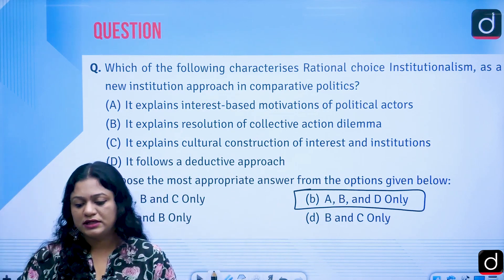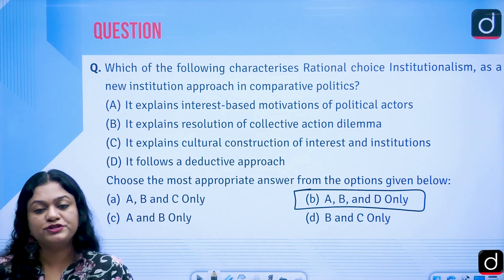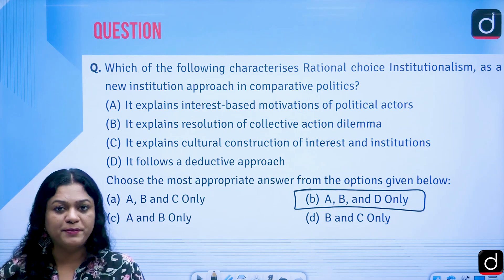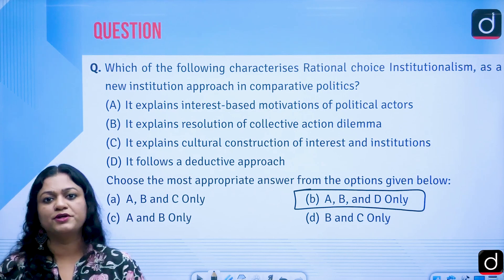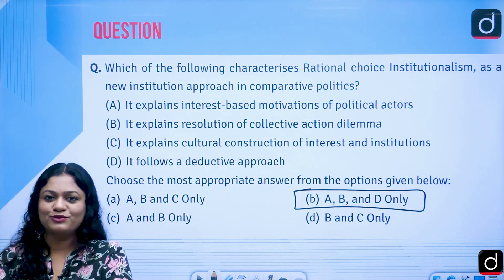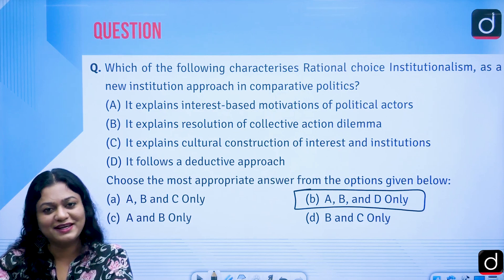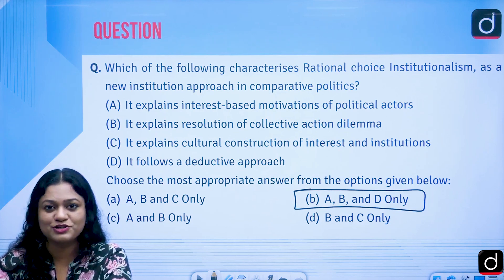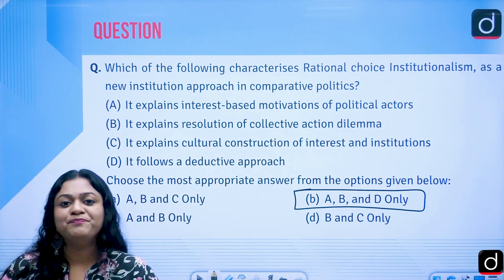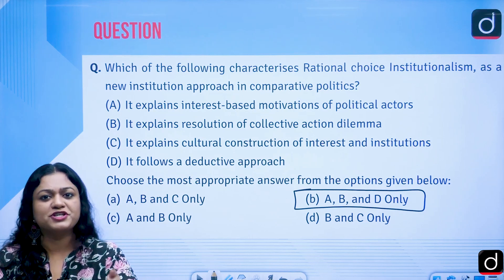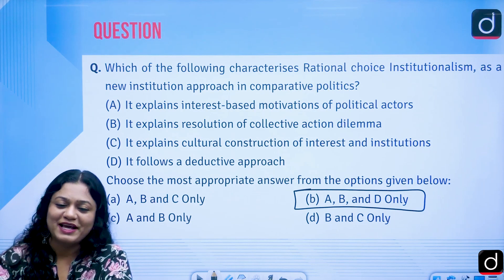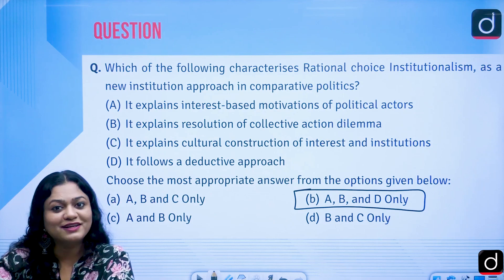This is all about the neo-institutionalist approach. There is an important announcement: our new batch for UGC Net Paper 1 and Paper 2 is starting from the 10th of July. Students preparing for UGC Net can check out and join this course for better preparation. For additional information, check the links given in the description box. Thank you for watching, see you in another lecture.